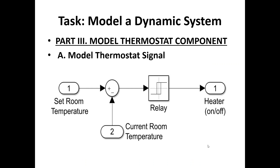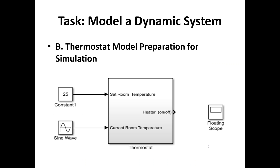Another task is modeling a thermostat signal, similar to the first subsystem. This time we have the set room temperature and the current room temperature that we compare, and the output is the heater on/off signal. Here's the simple simulation for the thermostat model: with a constant value of 25 and a sine wave, the output is connected to a floating scope.